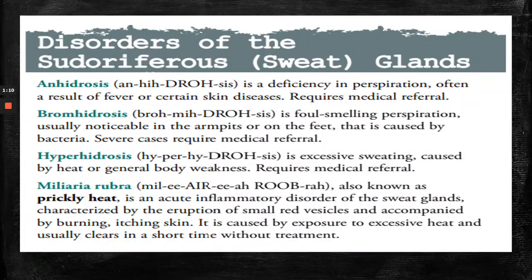Next we have the sudoriferous glands. I like to remember the shorter list versus the longer list: anhidrosis is a person that can't sweat; bromhidrosis — your bro stinks; hyperhidrosis — think of the person on the Secret commercial trying to blow dry her underarm with a hand dryer; and miliaria rubra.